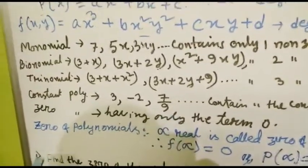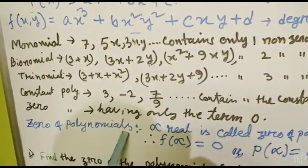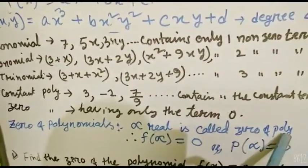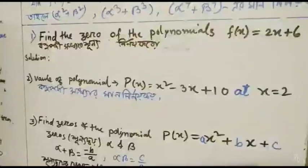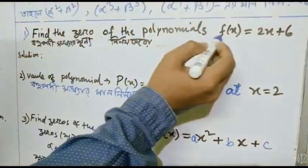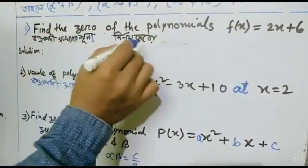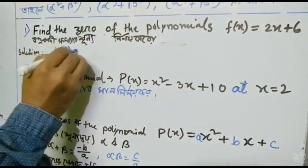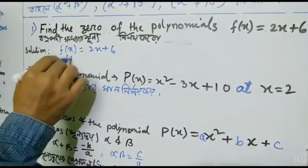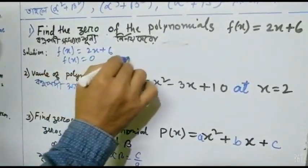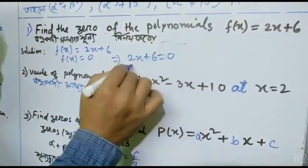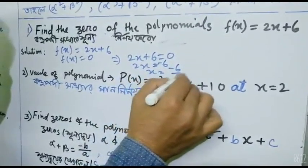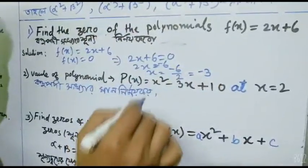Now we will discuss the zeros of polynomials. Suppose f(x) = 2x + 6. When f(x) = 0, therefore 2x + 6 = 0, and 2x = -6, then x = -6/2, that is equal to -3. So the value — the zero — is minus 3.